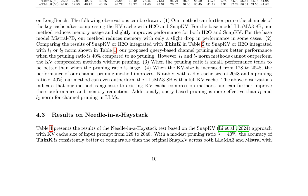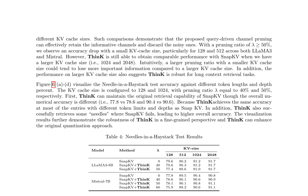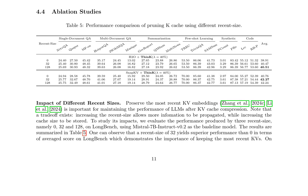THINK is evaluated on various KV cache sizes to demonstrate its effectiveness in retaining informative channels and discarding noisy ones. THINK can maintain comparable performance with SnapKV even with a larger pruning ratio and smaller KV cache size. The Needle-in-a-Haystack test accuracy is visualized against different token lengths and depth percentages, showcasing THINK's robustness in fine-grained retrieval tasks. Ablation studies indicate that a recent size of 32 yields superior performance compared to zero, demonstrating the importance of keeping the most recent KVs, while increasing the recent size to 128 does not significantly improve performance.